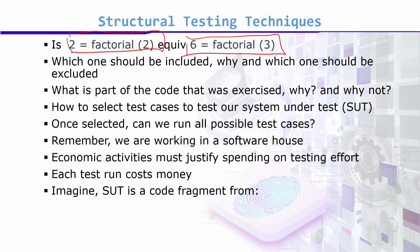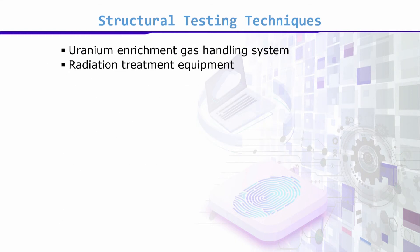Another question arises here. The system under test could be a code fragment from a safety-critical system: a lab assignment, a uranium enrichment gas handling system, or radiation treatment equipment. Would you give all of these the same sensitivity? Consider — if you're doing a lab assignment, would you write the same number of test cases as you would for a uranium enrichment gas handling system that generates electricity for a reactor? Can we have the same number of test cases for all?